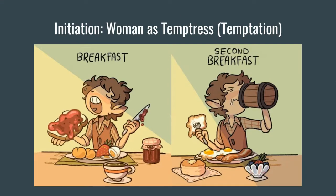There were no female characters in the story, so the 'woman as temptress' step can be tricky. This step represents anything that can tempt the hero away from their journey. There are a couple of times where Bilbo very strongly considers quitting altogether because staying home sounds so much more comforting — eating wonderful food, breakfast, second breakfast, third breakfast, and all of that. Bilbo's homesick nature ends up being his temptation. Anytime he's tempted to quit, he's thinking about food and home.